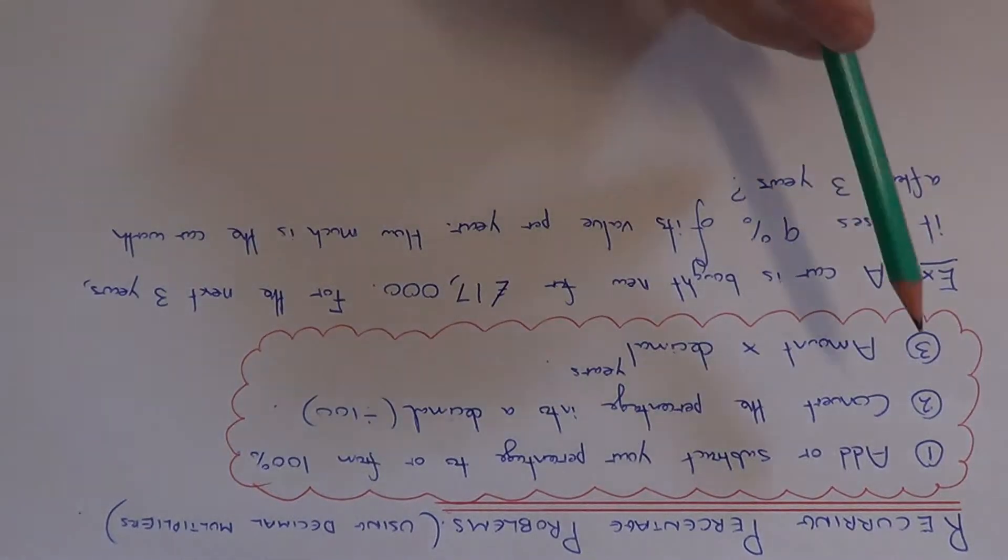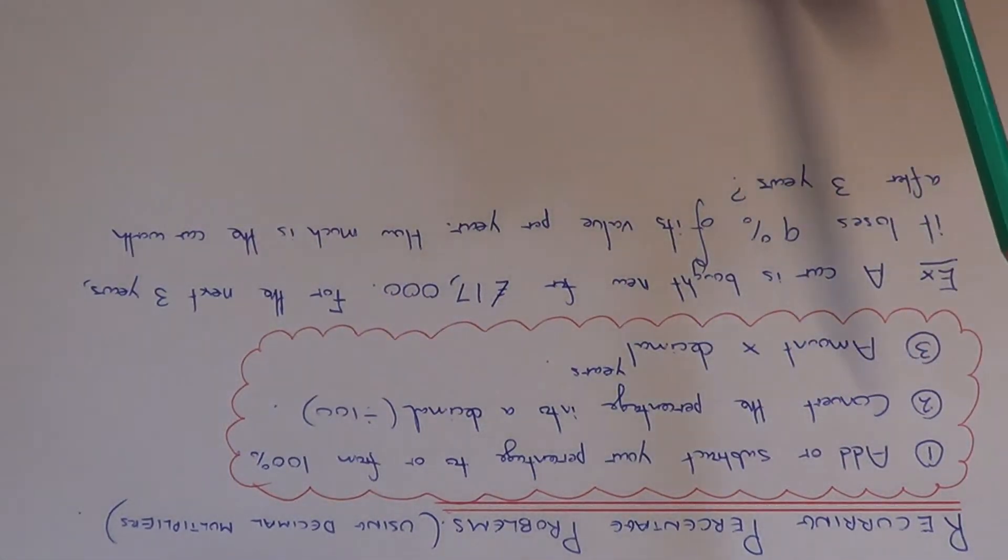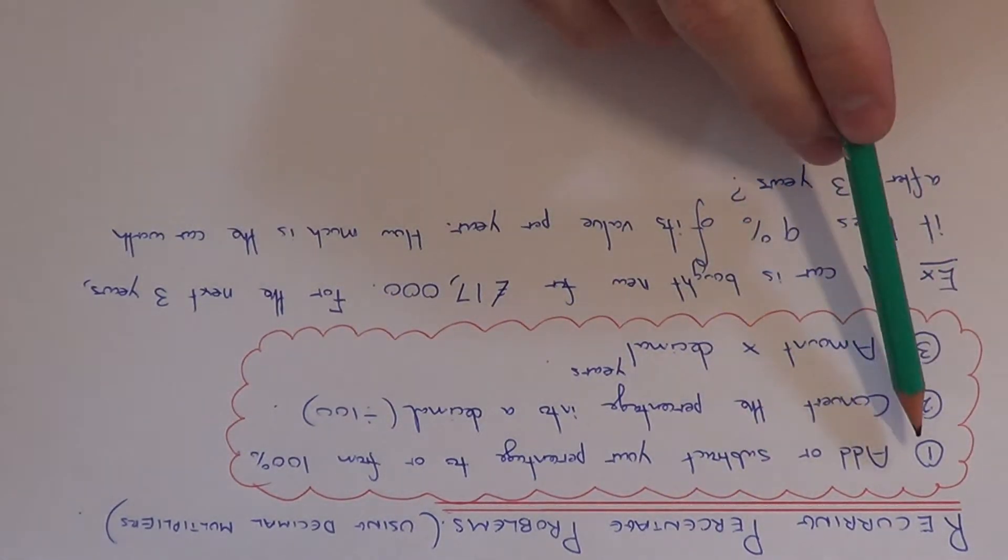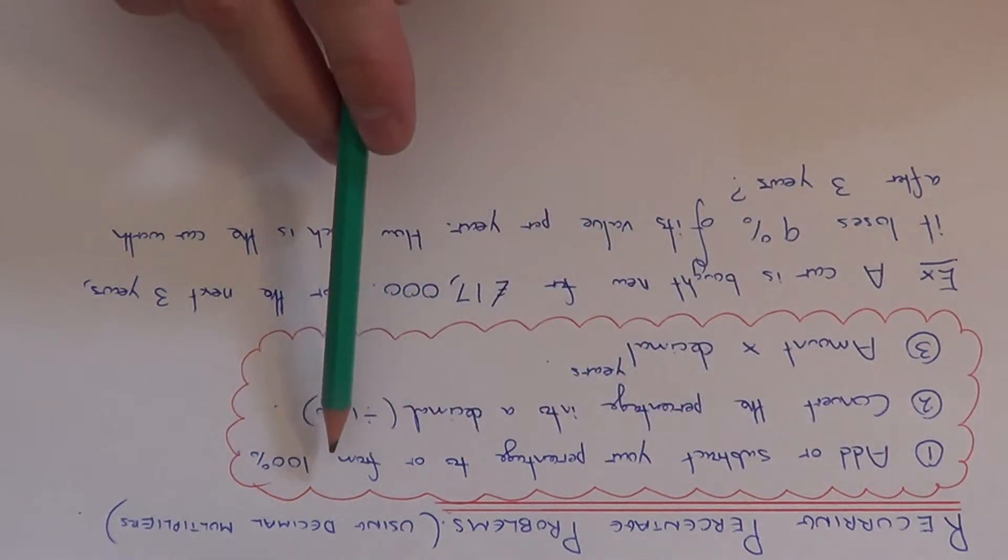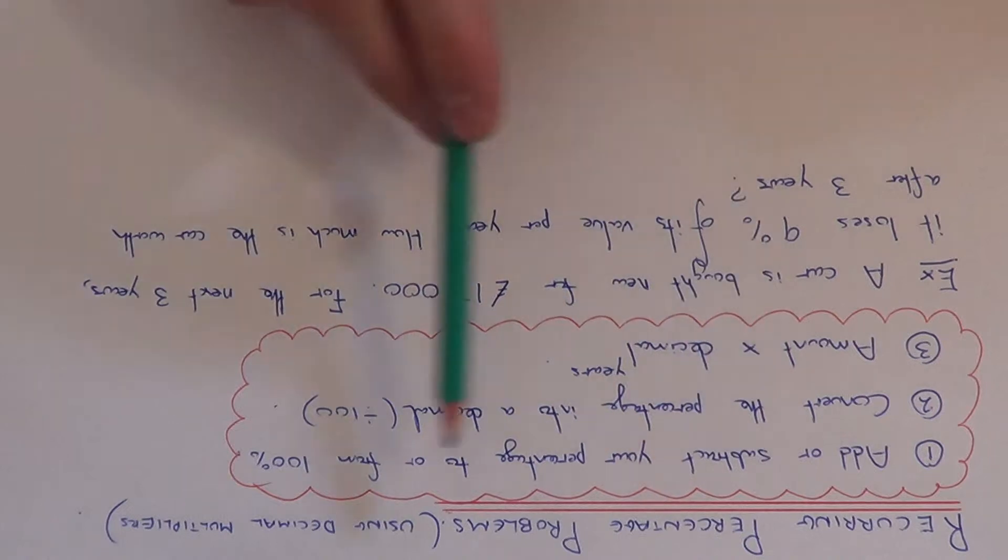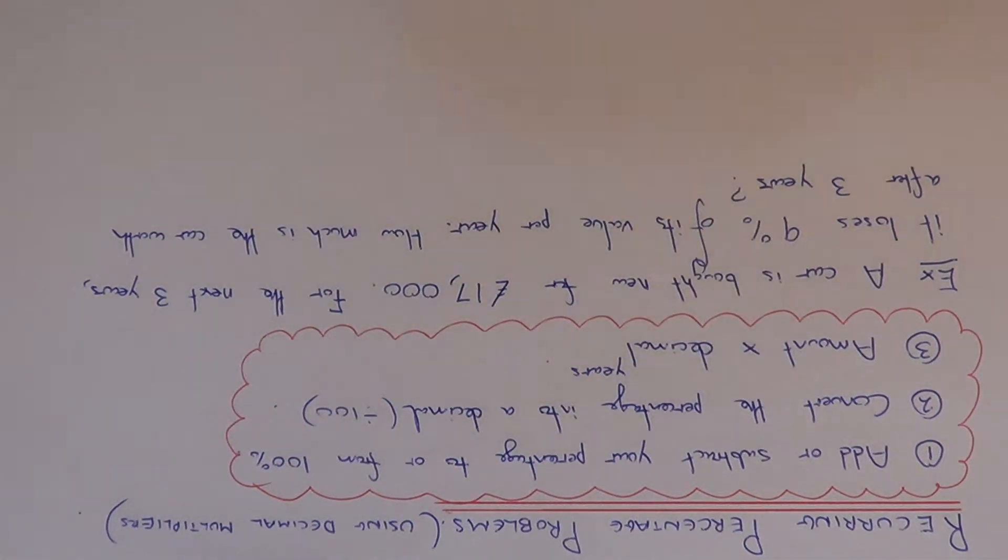So here are the three steps we need to follow. First of all, we need to get our decimal multiplier, and you do this by adding or subtracting your percentage to or from 100%. So if you're doing an increase, you add it on to 100; if it's a decrease, you take the percentage away from 100.